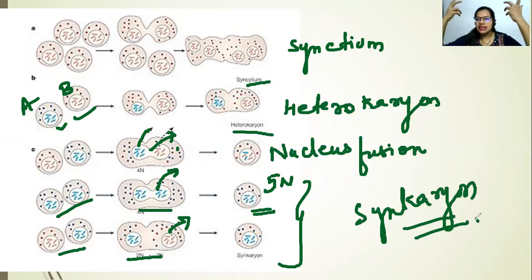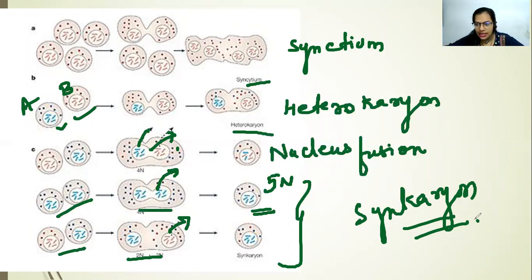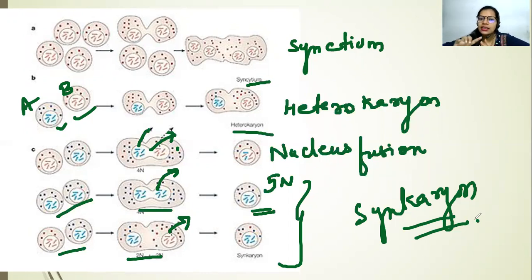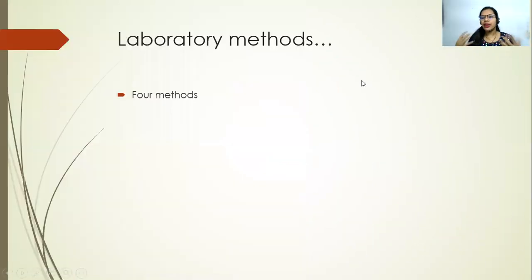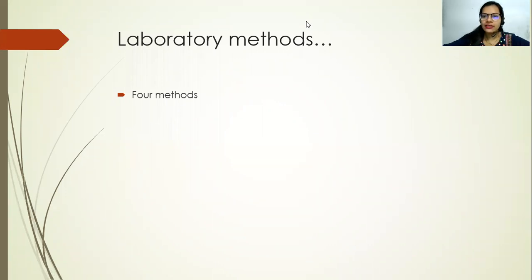To revise: cells of the same origin fuse to form a syncytium where the nucleus is not fused. Two different cells fuse to form a heterocaryon — again, nucleus not fused. In the third scenario, nuclear fusion takes place and the overall DNA content remains relatively constant, though it may be lost from one or both nuclei. All these cases resulting in nuclear fusion are called syncaryon. Now, in the lab, there are four categories of cell fusion methods depending on your experimental requirements.